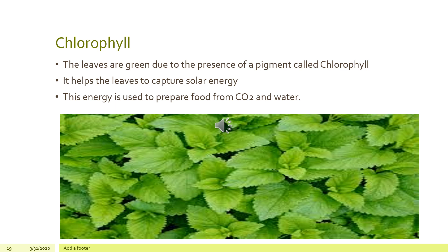Chlorophyll is another raw material for photosynthesis. It is a green-colored pigment present in the leaves which helps in trapping solar energy to prepare food from carbon dioxide and water.